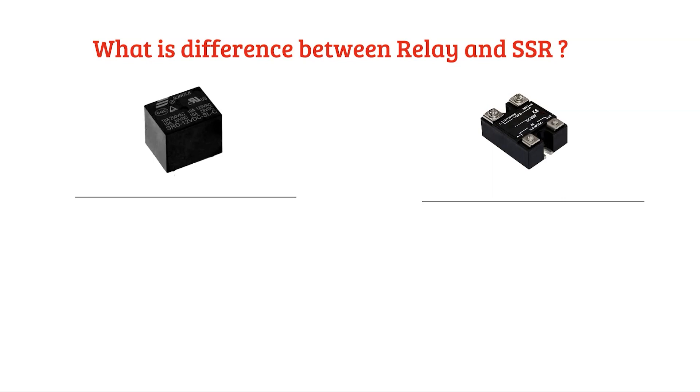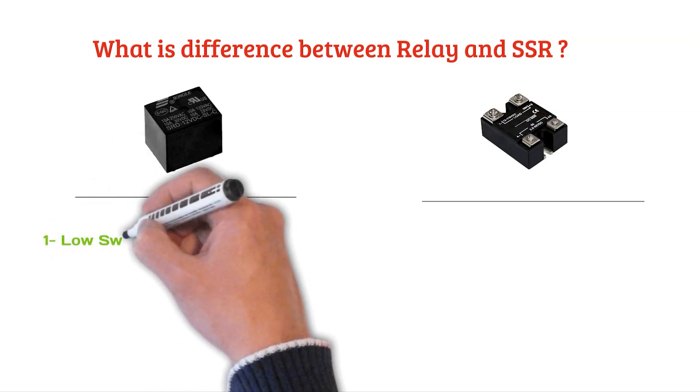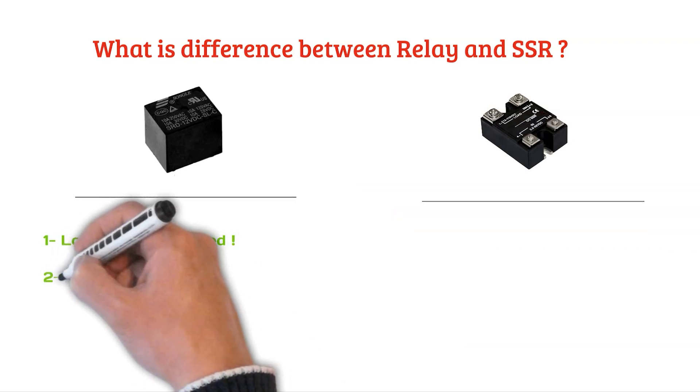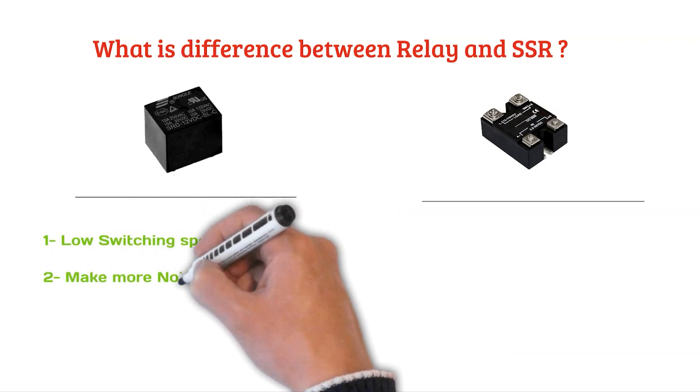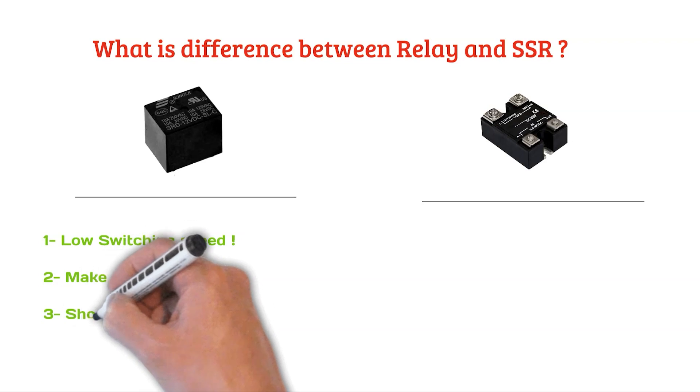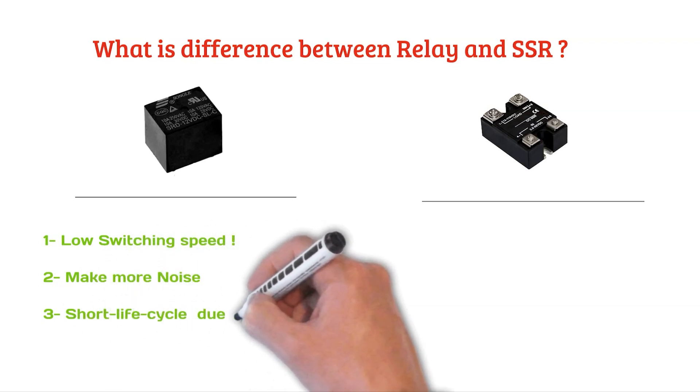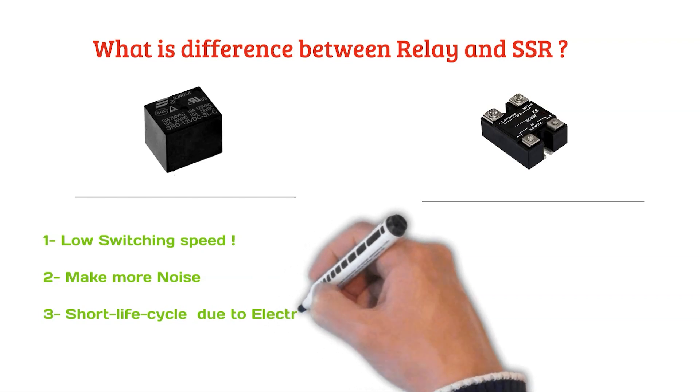But what are the features of each of them? Low switching speed for common relay, makes more noise inside the circuit, short life cycle due to the electric arc.